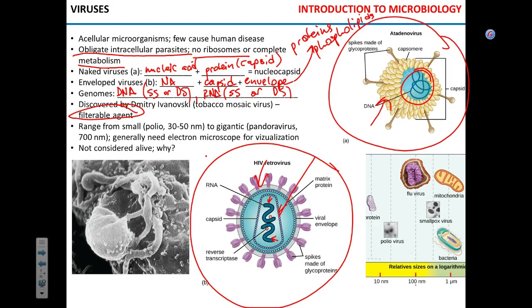Viruses can be very small — like poliovirus at about 30–50 nanometers — or extremely large. The largest virus known so far is called Pandora virus; it has nothing to do with humans and actually infects amoeba. It's 700 nanometers in diameter and can be seen in the light microscope. This is why it was discovered only about 10 years ago — when people looked at amoeba, they saw this giant thing inside the cell and thought it couldn't be a virus, but it was. Even the biggest viruses cannot survive without a host cell.